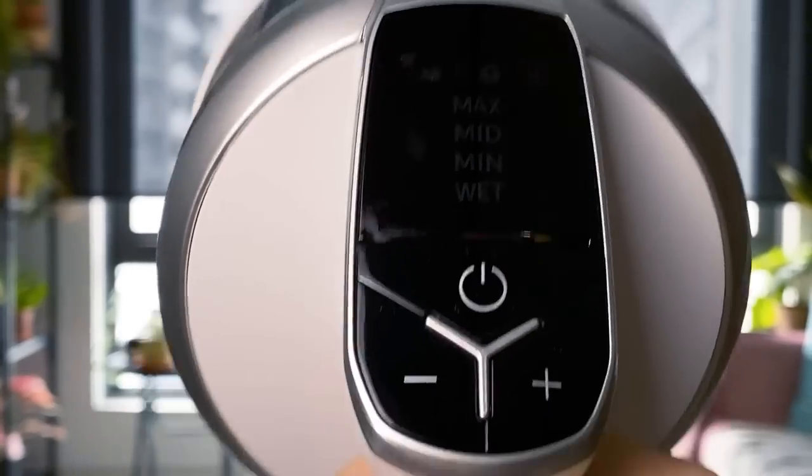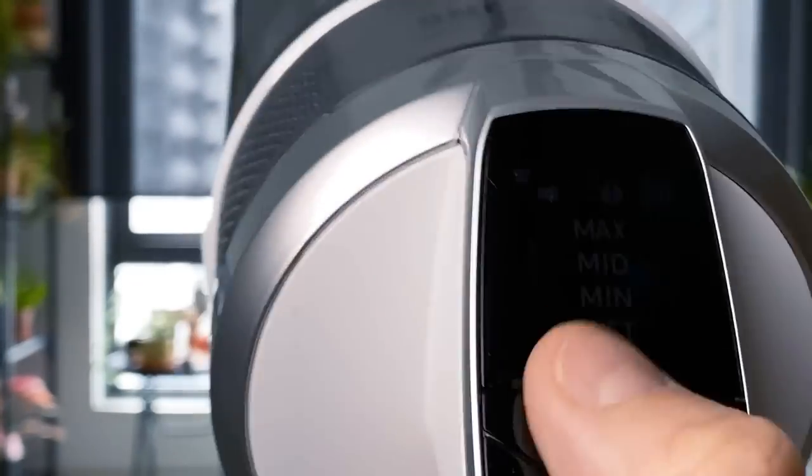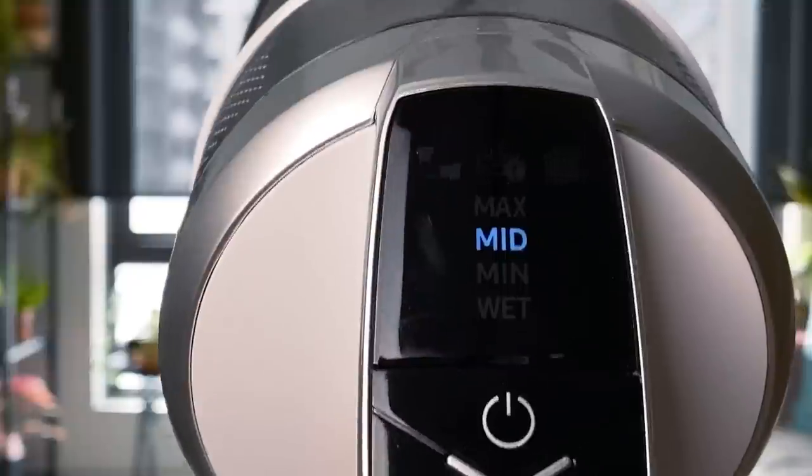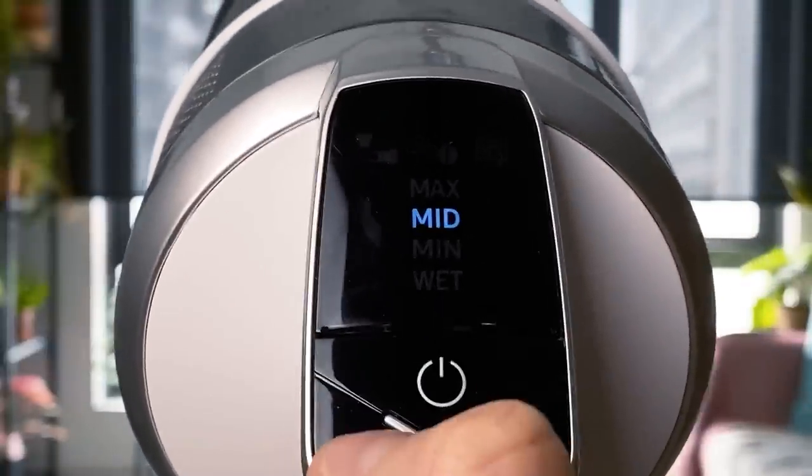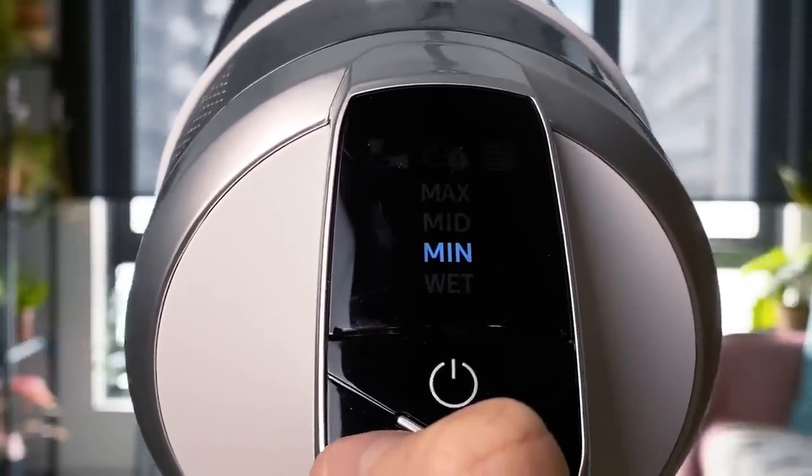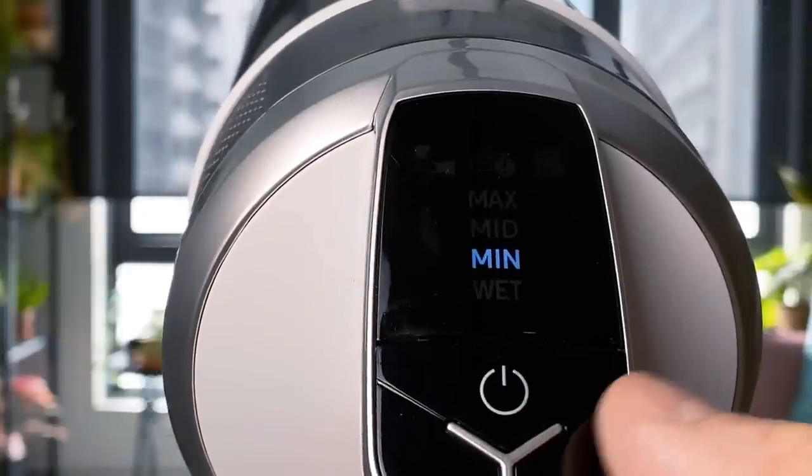To start vacuuming, all you need to do is select a user mode and press the power button. There are various usage modes to choose from: min, mid, max. Or if you have a wet accessory, you can select the wet mode.